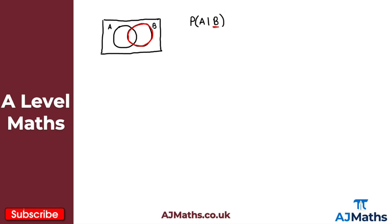Let's take a look at another example. Say we're looking for the probability of B given A — now we're restricting the sample space to just A. The probability of B given A: the actual region we want is simply the intersection, because that's the only part of B that's in the restricted sample space A. The same is true for the probability of A given B — the region we want is the intersection, since that's the only part of A in the restricted sample space B.